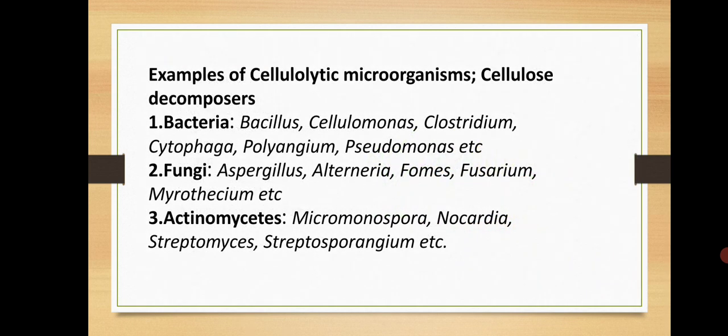Now, what are examples of cellulolytic microorganisms — cellulose decomposers — since we are discussing degradation of cellulose? There are different bacteria, fungi, and actinomycetes that play a key role in the degradation of cellulose. Bacteria include Bacillus, Cellulomonas, Clostridium, Cytophaga, Polyangium, Pseudomonas, etc. These bacteria degrade cellulose and break the cellulose chain into single glucose units.